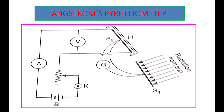When we look at the construction, we will see two strips here — S1 and S2. These two are black strips made of platinum, which are taken as examples of black bodies.